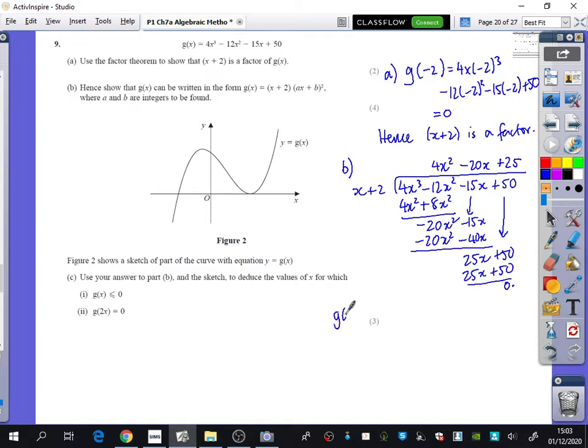So we have that g of x is x plus 2, 4x squared minus 20x plus 25. But they want it to be in this bit here. They want you to be able to factorise this second bracket. What does that factorise to? 2x minus 5, 2x minus 5, all squared. Okay, so that's the six marks for these bits that we've got so far.